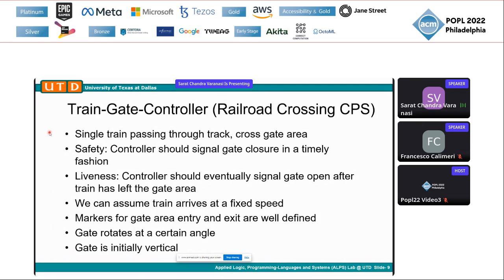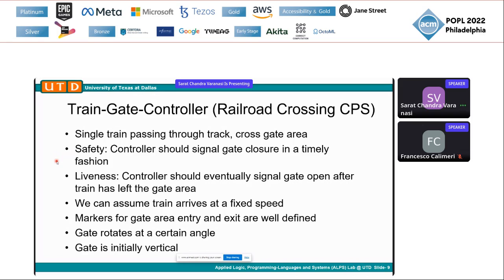We've applied this technique to the train gate controller, widely studied in CPS modeling literature. The setup is: there's a single train passing through a track and crossing a gate area. We are interested in safety and liveness of this TGC system. The controller should signal gate closure in a timely fashion — if the train is passing through the gate area, the gate should be completely closed. And liveness means the controller should eventually signal gate opening once the train has passed the gate area.